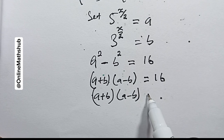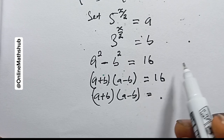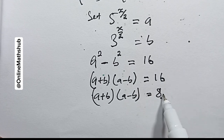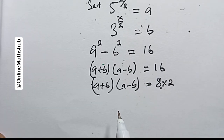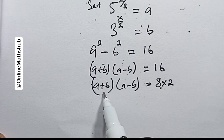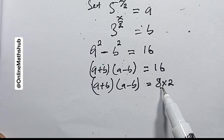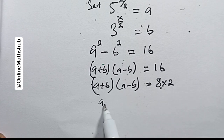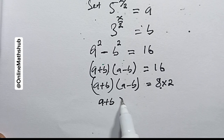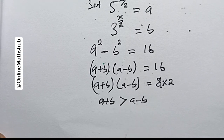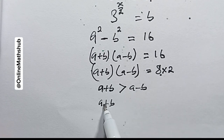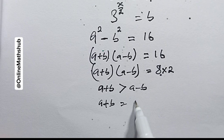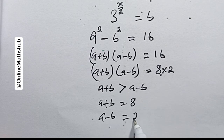I can rewrite 16 as the product 8 multiplied by 2. We can see that a + b is strictly bigger than a − b, so a + b equals 8 and a − b equals 2.